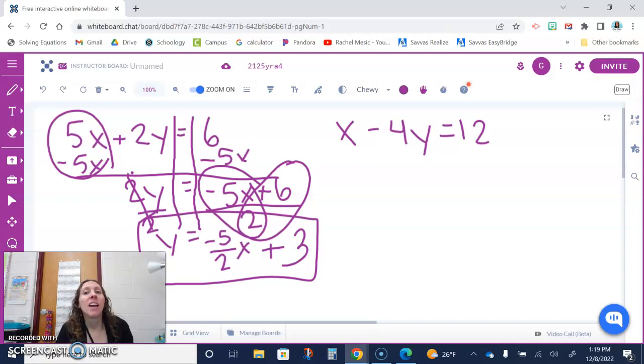Let's try another. x minus 4y equals 12. And again this is called standard form because the x's and y's are all on one side of the equal sign and then the integer is on the other side.